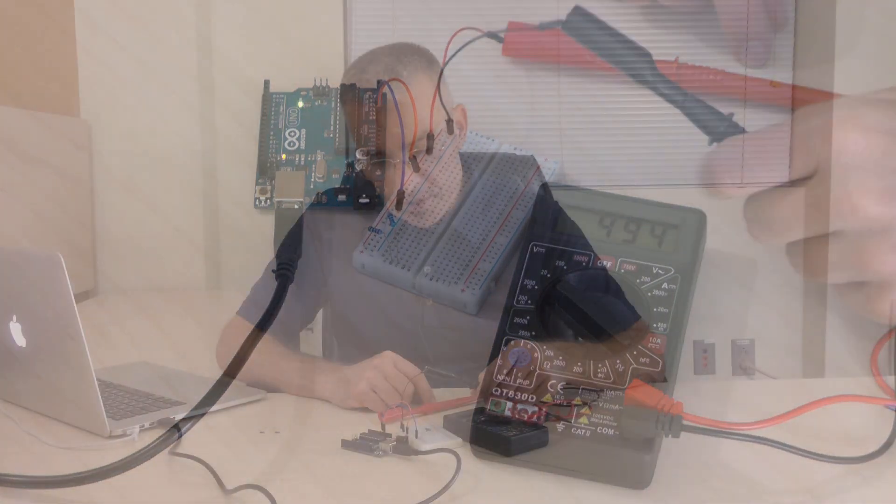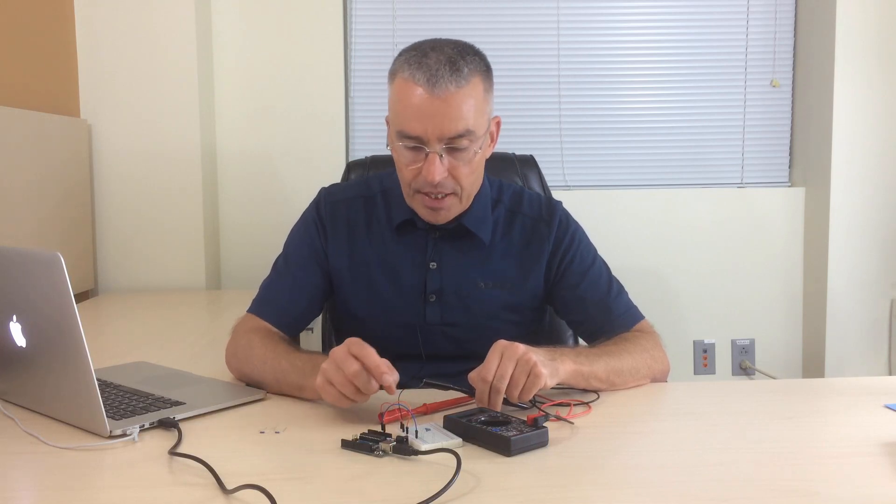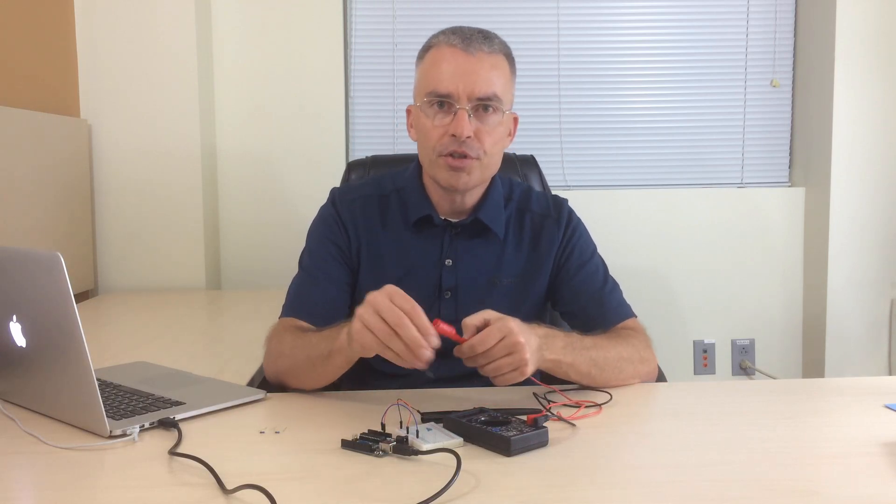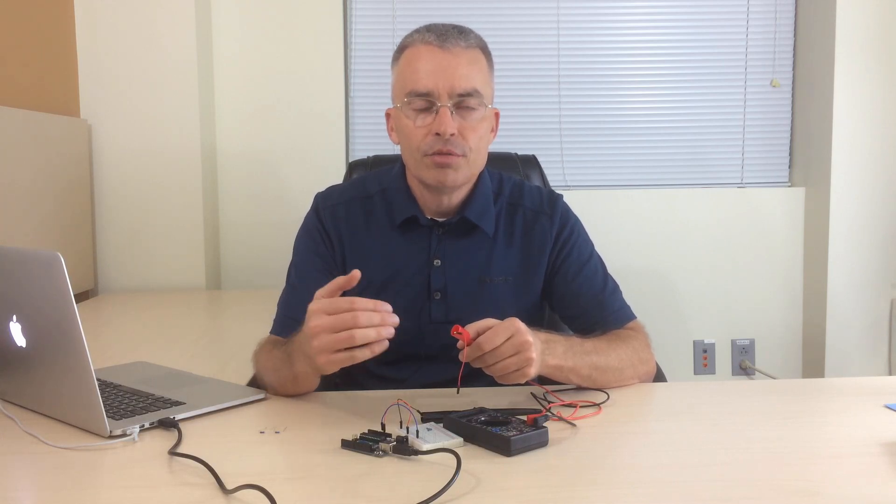Another thing that we should absorb here is that it's always a good idea to connect the com probe, the black one, to the ground rail of your system and then just leave it there and use the red one to probe the voltage in various locations on your circuit. That way you always get the voltage relative to the ground connection and that allows you to compare the voltages directly to a common reference point.